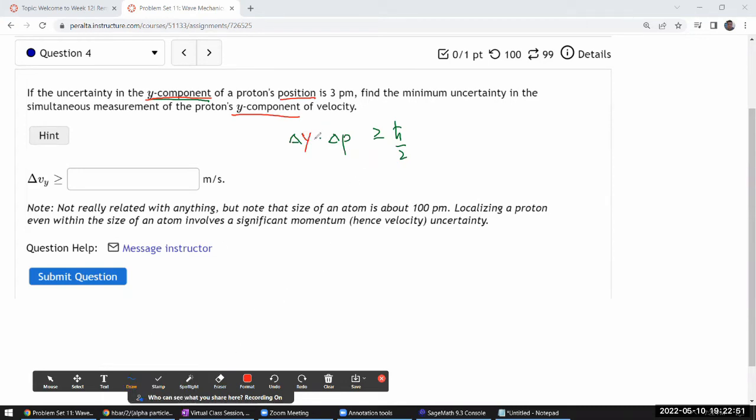So let me just make those changes here for the change in the component. Everything else remains the same, you know, delta y times delta p y is greater than or equal to h bar over two. Using momentum is mass times velocity, so also uncertainty in momentum for stable particles is the mass times uncertainty in velocity. And here I can imagine dividing left and right hand side by mass times uncertainty in y position. Both positive quantities, the inequality will stay the same. And I end with uncertainty in the velocity in the y component is greater than or equal to h bar over two times the mass of the proton times delta y.